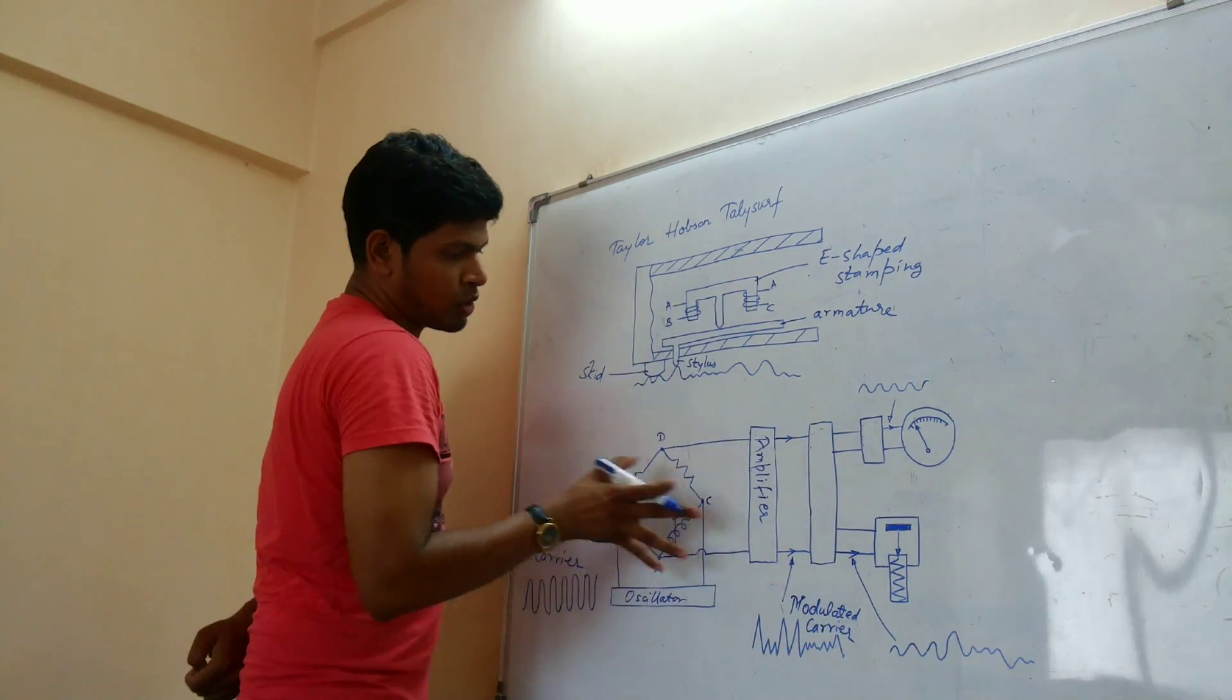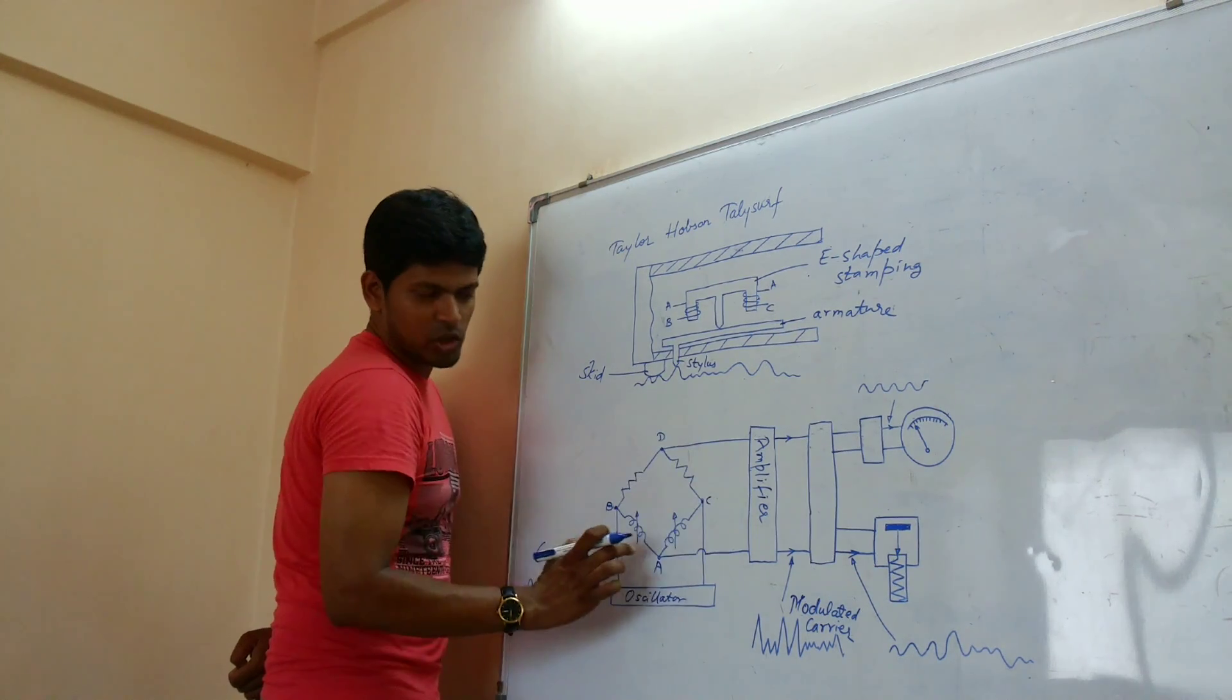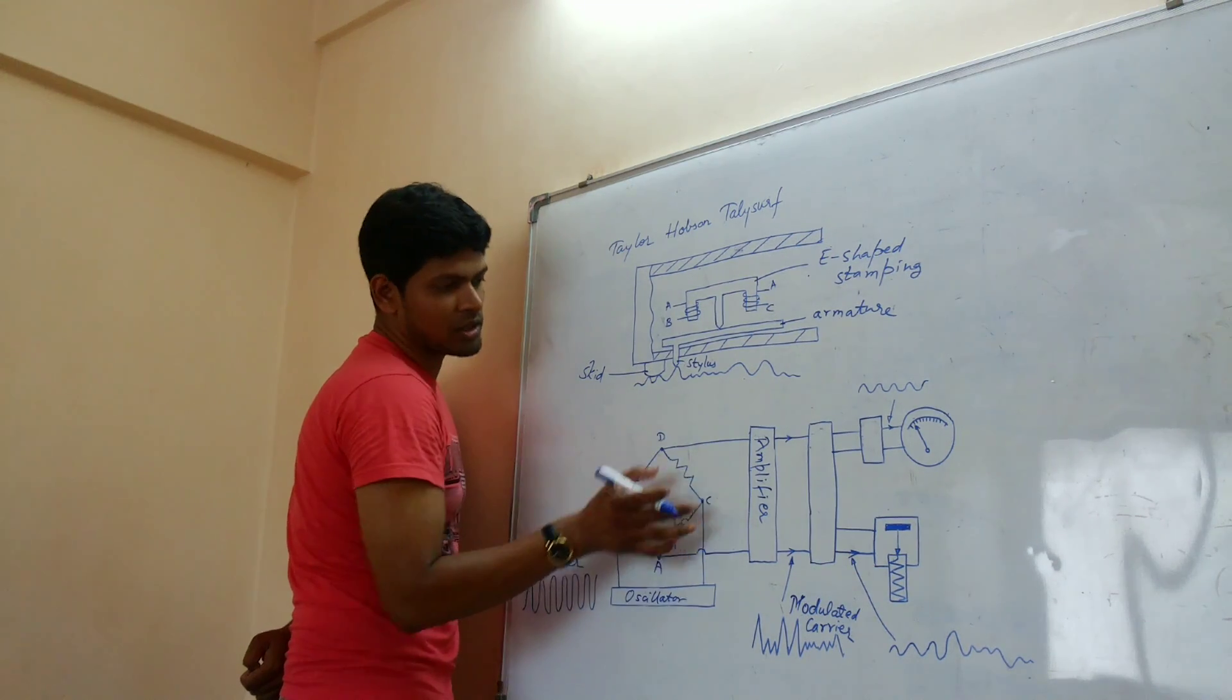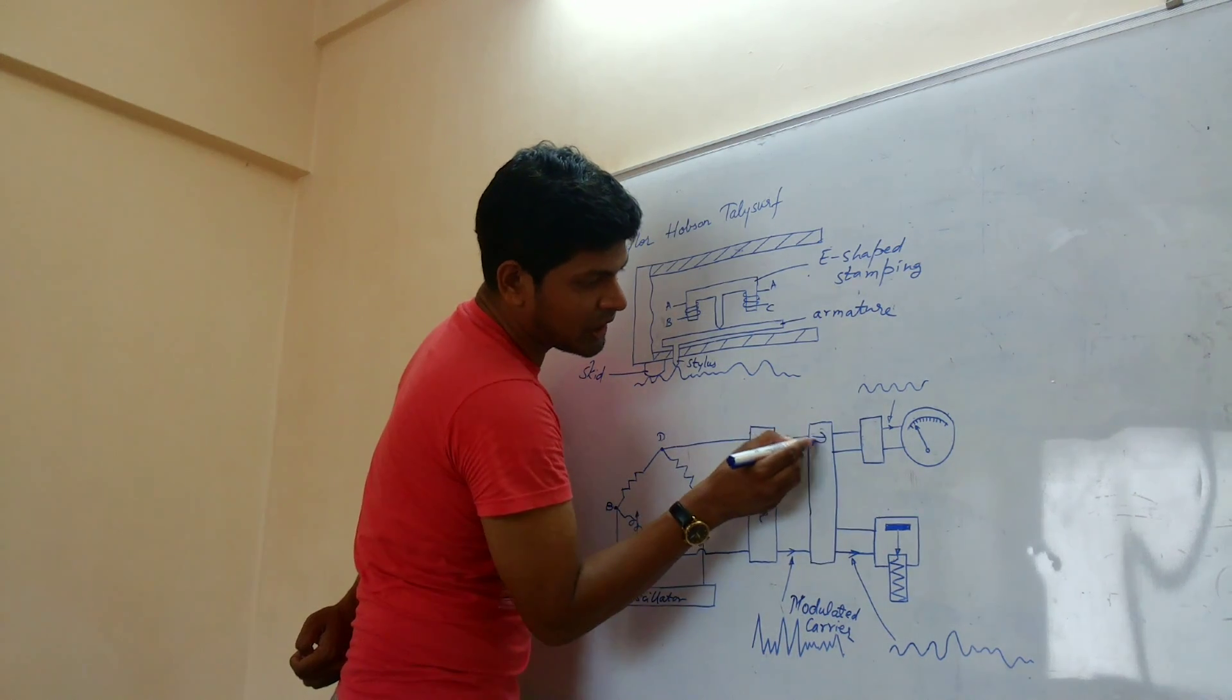So the modulated carrier is given by this bridge which is formed by the coils and the resistor. And it is amplified. And then it is fed to the demodulator.